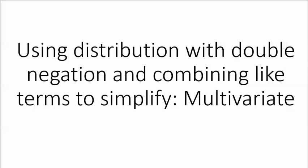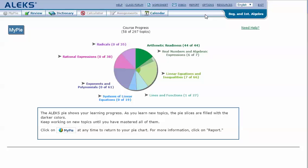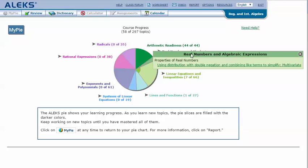Using distribution with double negation and combining like terms to simplify multivariate expressions. In your ALEKS pie, mouse over the light green slice for real numbers and algebraic expressions to reveal the drop-down list of topics you need to cover. Click on using distribution with double negation and combining like terms to simplify multivariate.